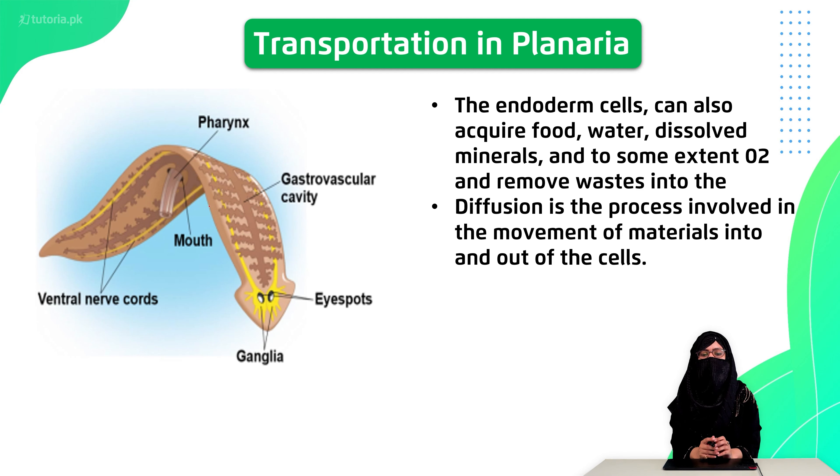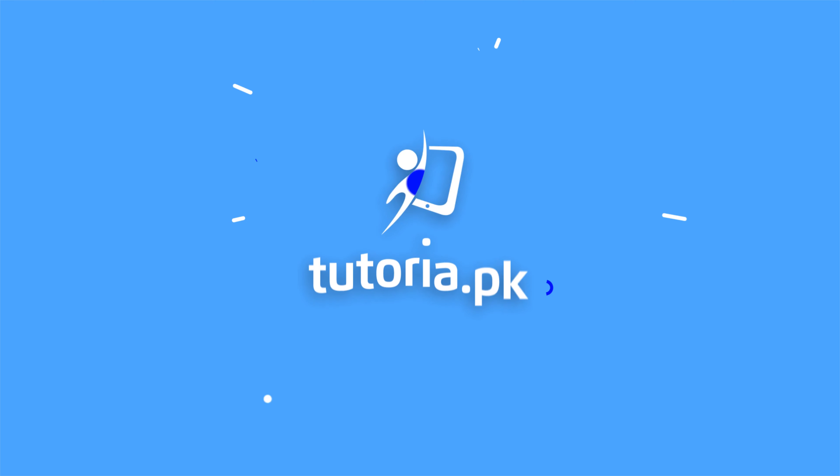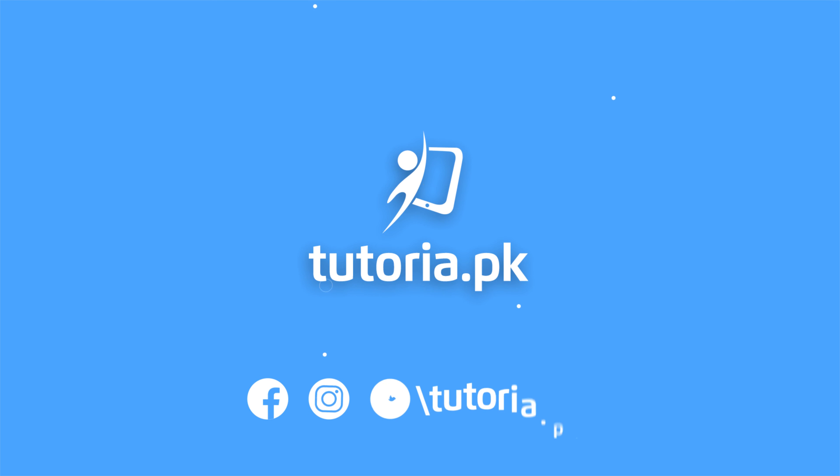If you can see it, there are two layers: the ectoderm and endoderm. The endoderm is involved in the diffusion process, and materials move both inside and outside. So hydra, planaria, flatworms, and other lower-organization animals all follow the diffusion process for food movement.